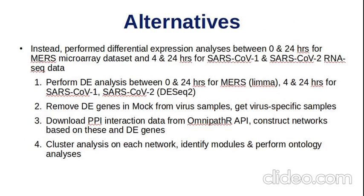However, as with many things in science, things don't go quite according to plan. We effectively got stuck on identifying enough differentially expressed genes to really do robust pathway or gene-regulatory network analysis across the time series, because they went from about 0 to 96 hours in some cases — quite broad and varied. So instead, we ended up deciding to simplify and perform differential expression analysis between 0 and 24 hours for the MERS microarray dataset, and 4 and 24 hours for the SARS-CoV-1 and 2 RNA-seq datasets that came out later on.